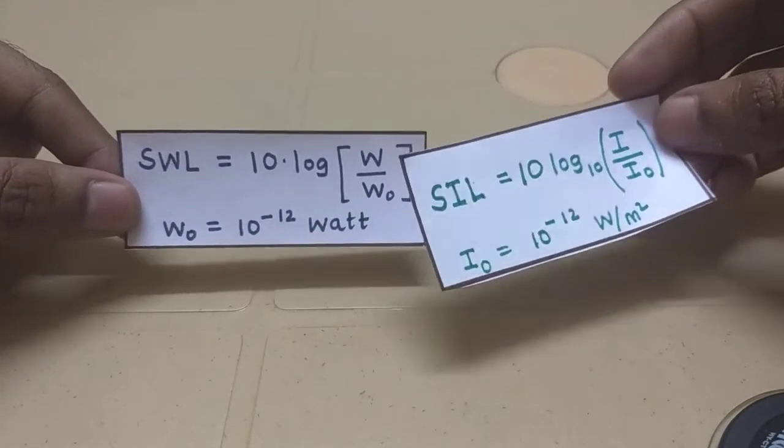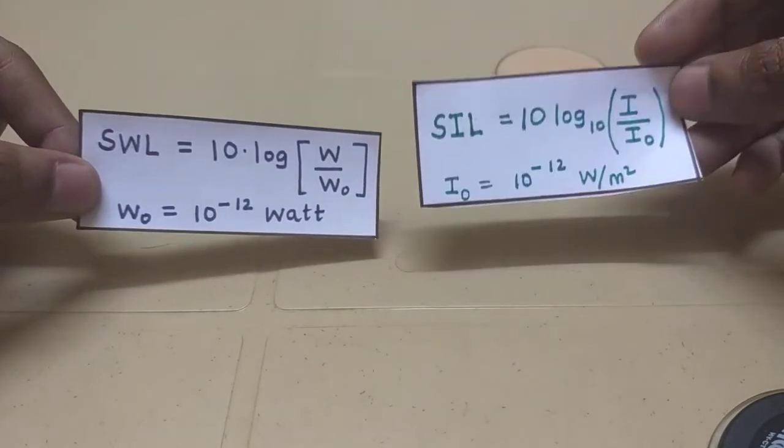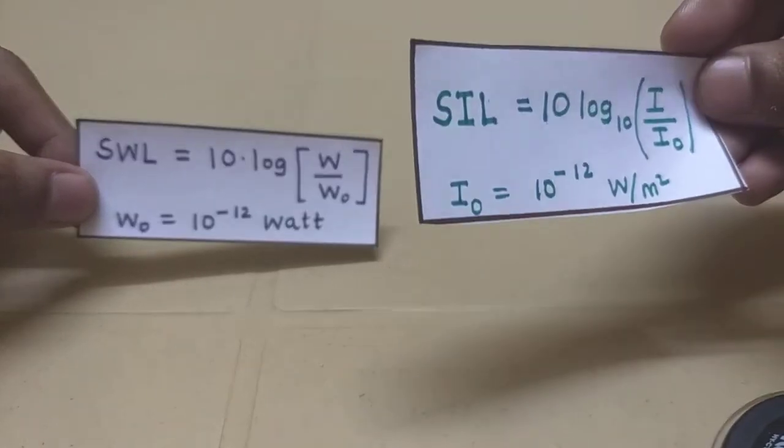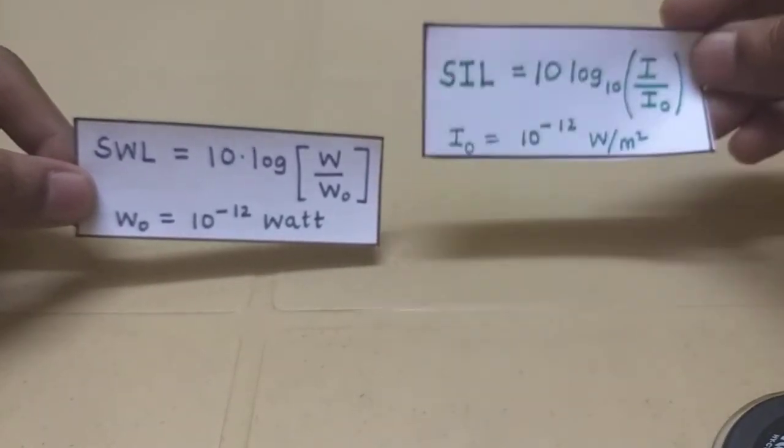Sound power is always positive, whereas sound intensity can be positive or negative based on the direction. The intensity toward the observer is positive, away from the observer is negative.